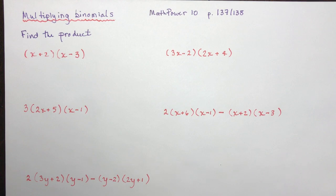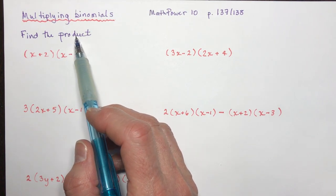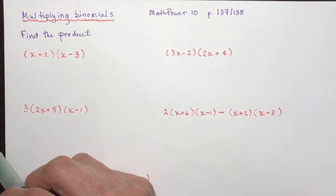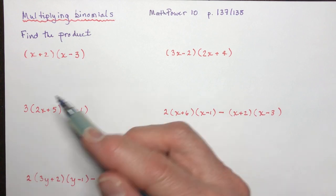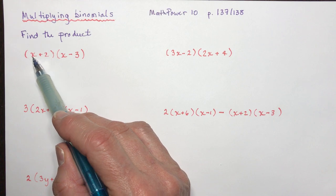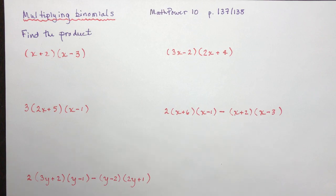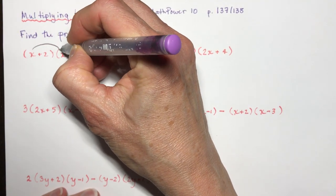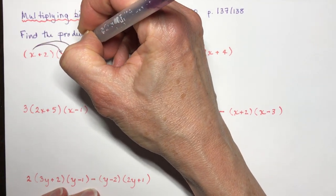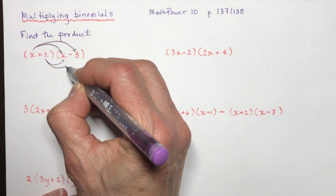When you see something like this and it says 'find the product,' product just means what do you get when you multiply these things together. How do you multiply two binomials? You're going to make little rainbows. You do x times this term, then x times that term, and then plus two times each of those terms.